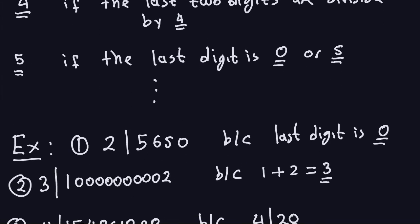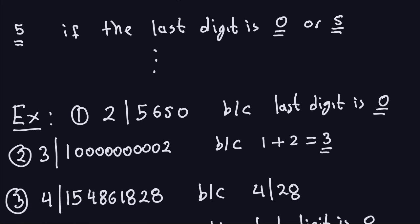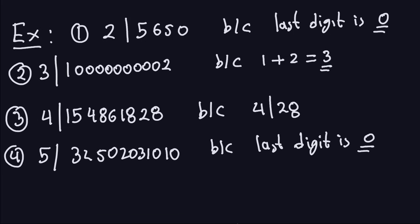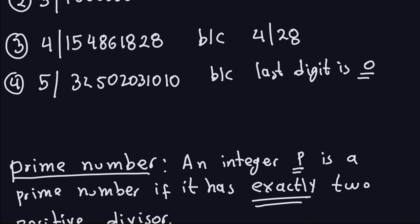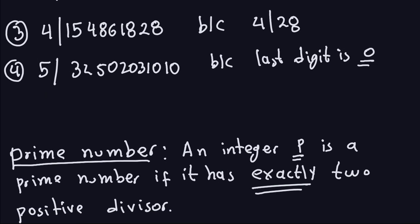I might mention other criteria later if we need them, but for now let's be content with what we have. So, an important concept in number theory — actually one of the most important concepts — is the concept of a prime number. We're going to say that an integer (from the collection 0, ±1, ±2, and so on) is a prime number if it has exactly two positive divisors.